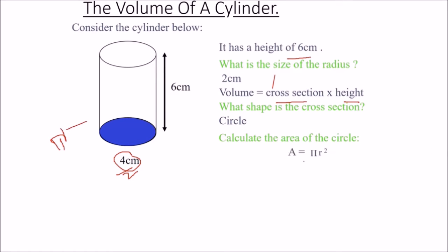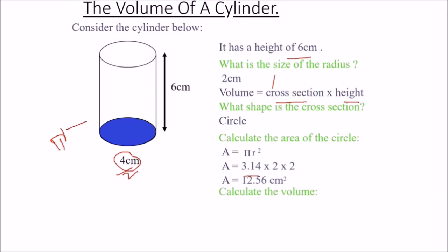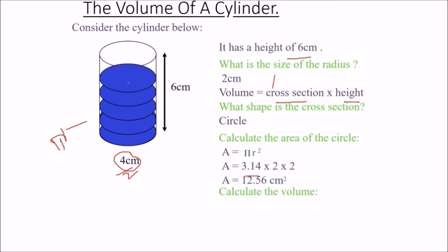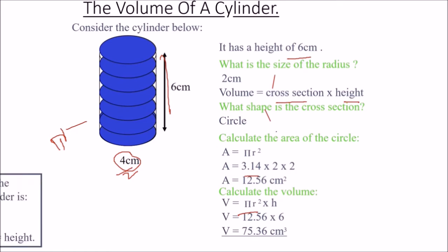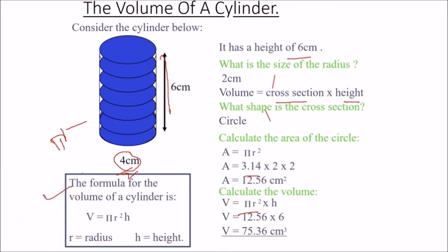The area of the circle is π r², so 3.14 into 2 into 2 equals 12.56 centimeter square. We then multiply by height 6: 12.56 multiplied by 6 equals 75.36 centimeter cube. Therefore, the formula for volume of a cylinder is π r² h.